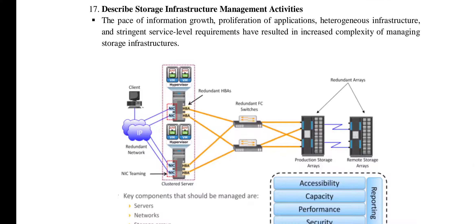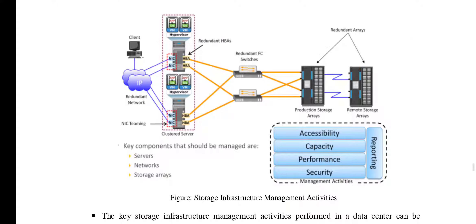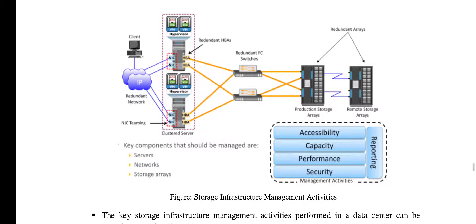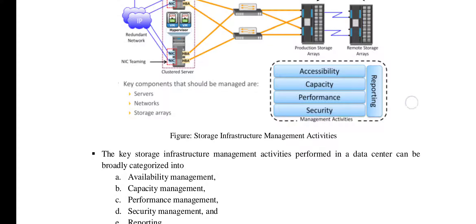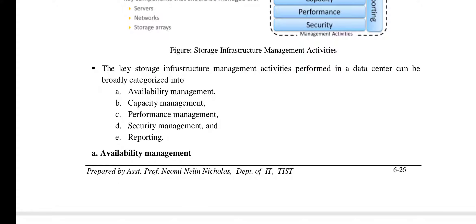Next are the storage infrastructure management activities. The components involved are the network, the storage arrays, and the server. These are the key components, and we have discussed the parameters plus a reporting parameter — all coming under the storage infrastructure management activities. These are categorized into five areas: availability management, capacity management, performance management, security management, and reporting.